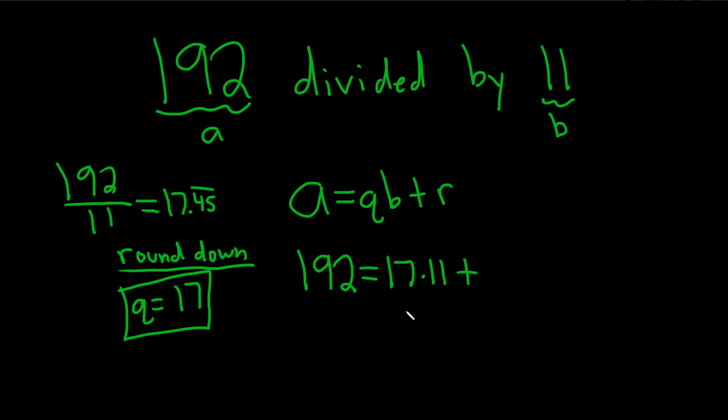To do that, the way I do it is I just multiply these in my calculator. So 17 times 11, that's 187. I write it below like this. Then you say, how do you get R? Well, you can just subtract. So you see the answer is 5.